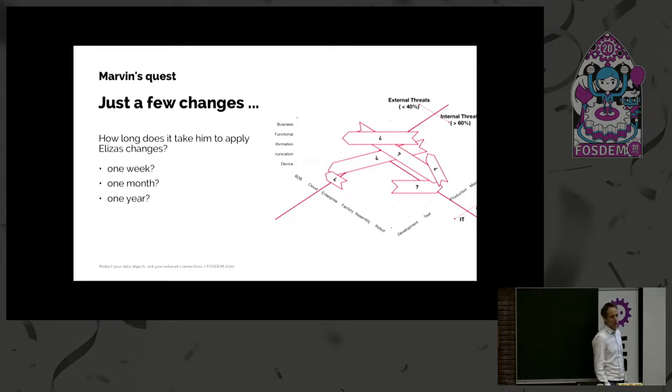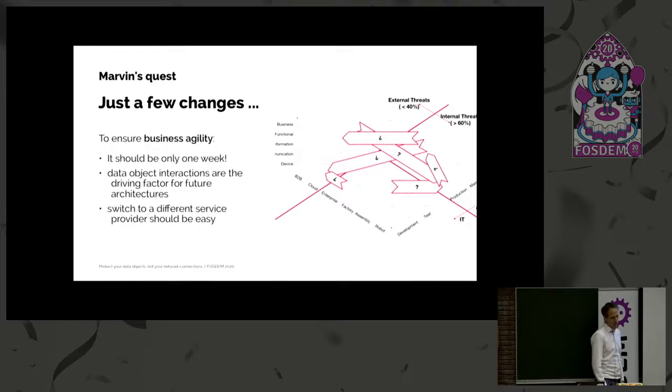So last week we had the chance to catch up with Marvin and Eliza pointed out, it's actually important that we would like to have this happening in one week because that's the business agility. So that is what in the end defines if your company survives or not. But data interactions are the driving factor actually in the future. And switch to a different service provider should be very easy.